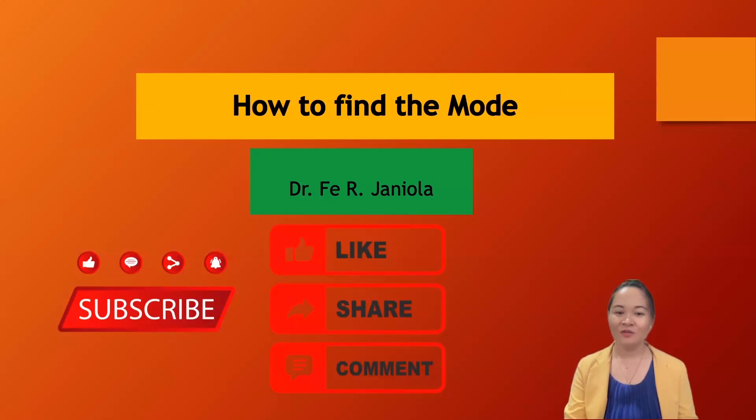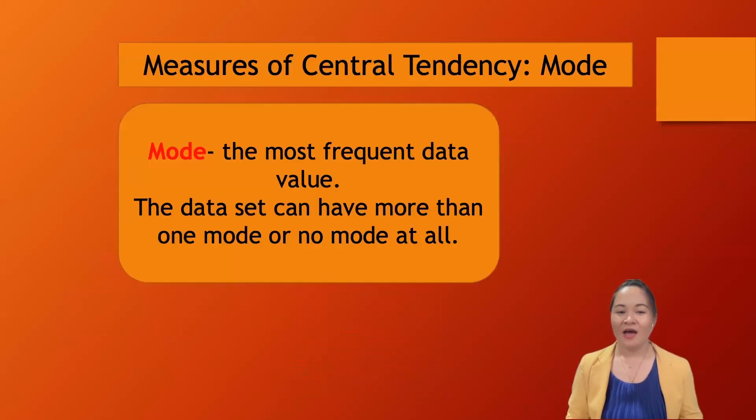So how to find the mode? One of the measures of central tendency is the mode. Mode is the most frequent data value. The given set of data can be unimodal (one mode) or bimodal (two modes).